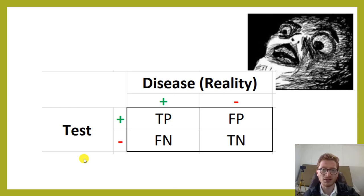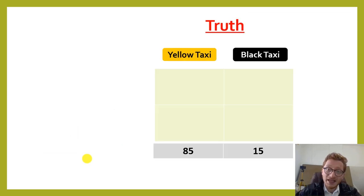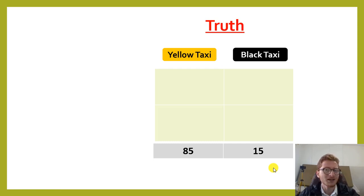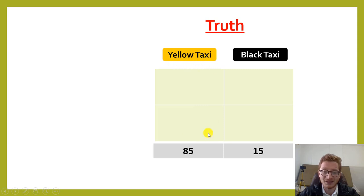It is the cross-tabulation table — the table that shows you the true and false positives and negatives. There is always a false positive and false negative, and this is the way to solve it. If we think about it, there is a truth, a reality: the majority are yellow taxis and the minority are black taxis. If a taxi ran over someone at night and you had to make a random guess, your best guess would actually be that a yellow taxi is more likely to have caused the accident.